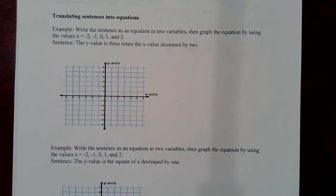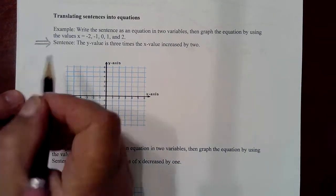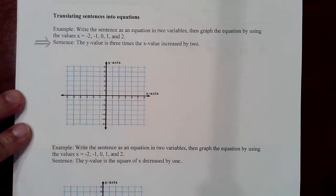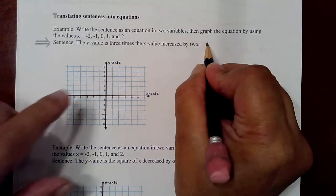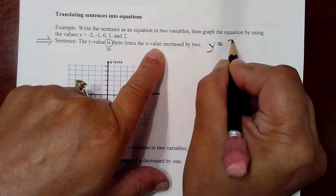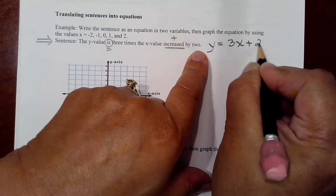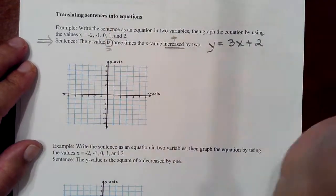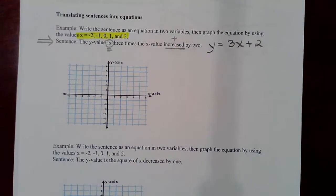Now we're going to write a sentence as an equation in two variables — using Y and X to take this sentence and write it as an equation. Then we're going to plug in the values negative 2, negative 1, 0, 1, and 2 for our X values after we create the equation, and we're going to graph it. So it says: the Y-value is — means equal — three times the X-value, increased by — that means add — 2. So there's your equation: y = 3x + 2.